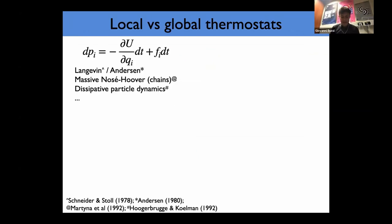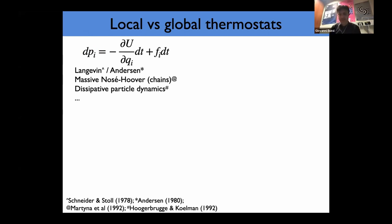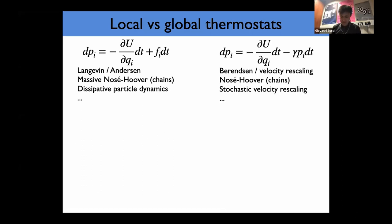There is another distinction: between local and global thermostats. Examples of local thermostats include the Langevin equation, Andersen, Massive, Nosé-Hoover, and dissipative particle dynamics. In all these cases, you add a force to each particle independently. Every particle is thermalized independently of the others. In global thermostats, you control all the particles simultaneously using a single friction — not depending on the particle index i — which acts the same on every atom. This friction could be time-dependent, or equivalently, at every step you scale all the velocities by the same multiplicative factor.